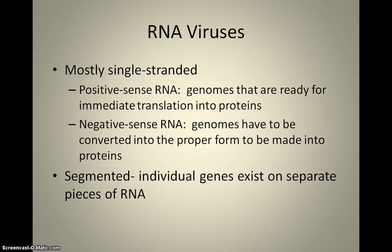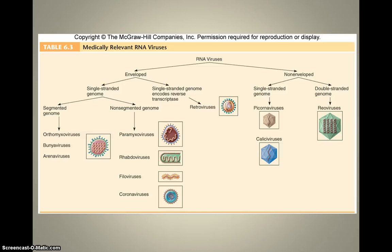Some RNA viruses can also have segments — instead of one long single strand, they'll have tiny little segments where different genes are in each segment. We group them the same way we do DNA viruses: we split them into non-enveloped and enveloped. Non-enveloped can be single-stranded or double-stranded, getting different names. Enveloped single-stranded viruses are further divided into segmented and non-segmented.